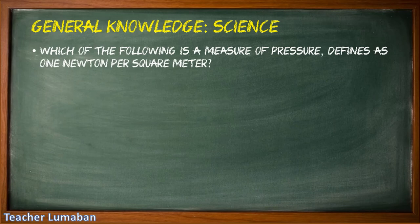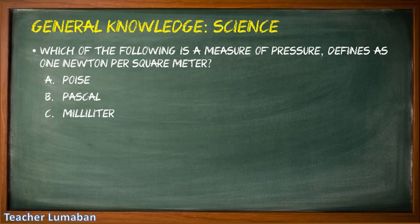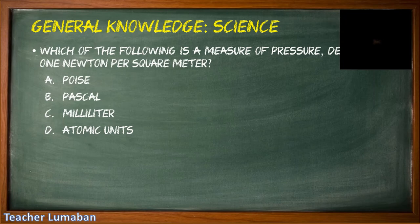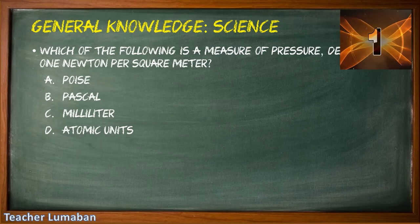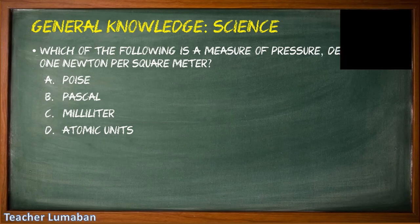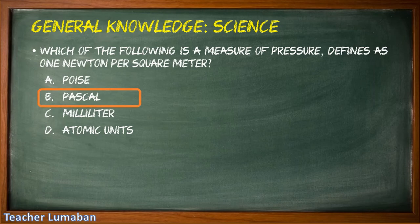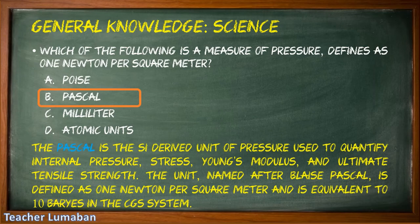Which of the following is a measure of pressure defined as one Newton per square meter? Letter A: poise, Letter B: Pascal, Letter C: milliliter, Letter D: atomic units. The correct answer is Letter B: Pascal. The measure of pressure defined as one Newton per square meter is the Pascal. The Pascal is the SI derived unit of pressure used to quantify internal pressure and stress, equivalent to one Newton per square meter and equivalent to ten barye in the CGS system.